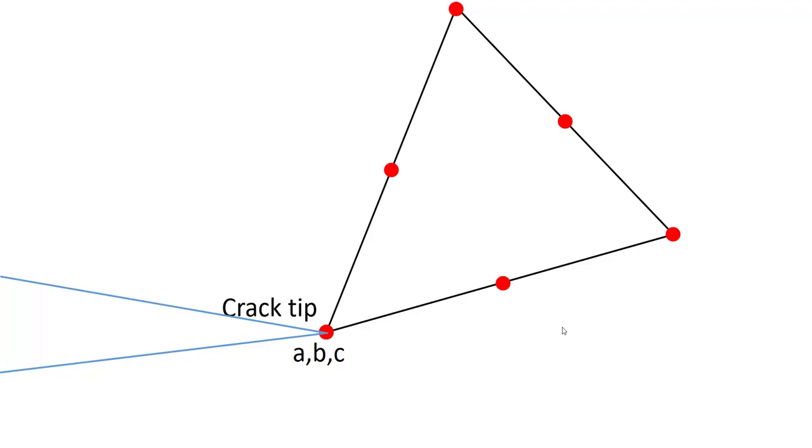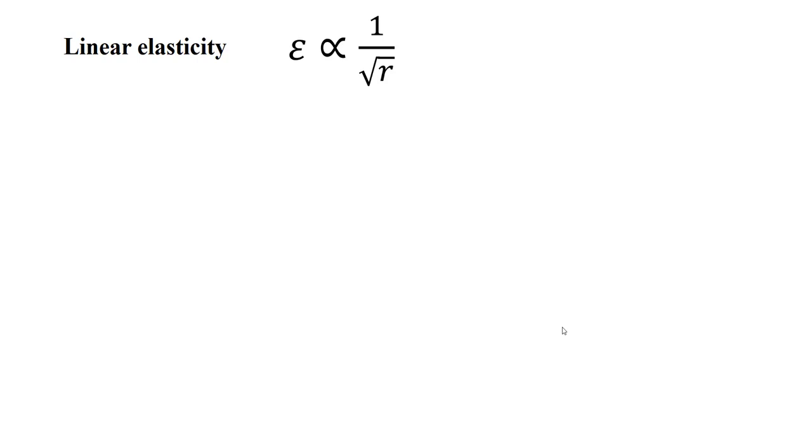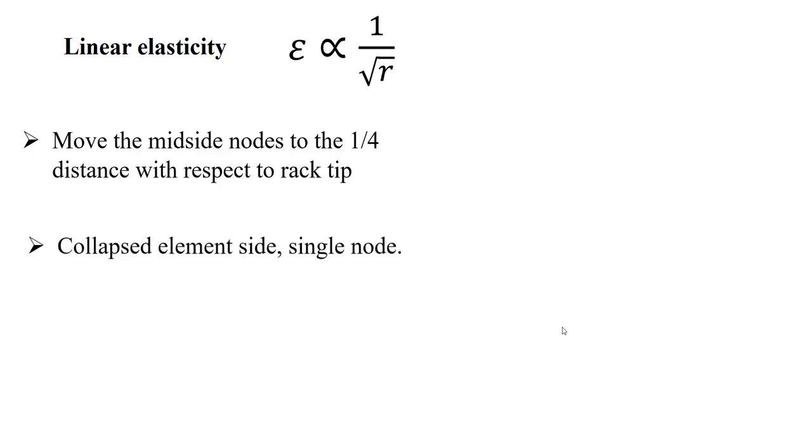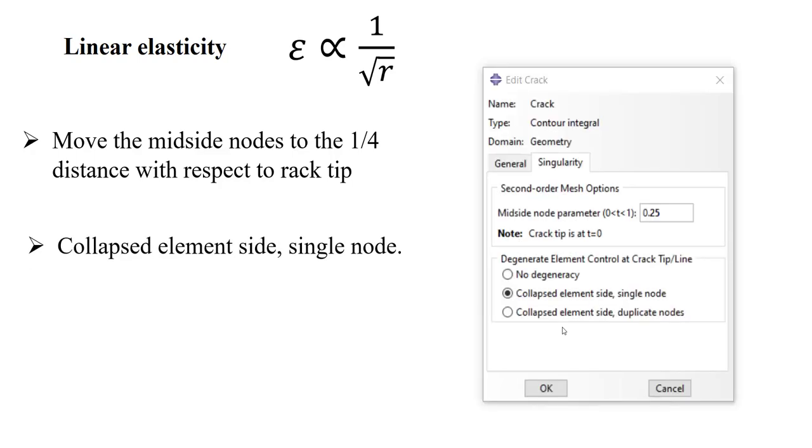And then we can move mid-side nodes of the elements. To model a square root singularity, which relates to linear elasticity, we should move the mid-side nodes to the one-fourth distance with respect to the crack tip, and also we should collapse element side to single node.